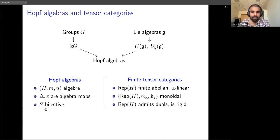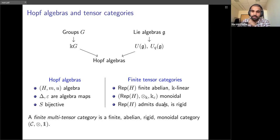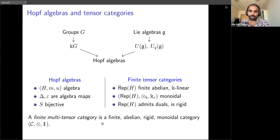The antipode map allows us to define duals in this category, making it rigid. So if we have a category with these features we call it a finite multi-tensor category — it is a finite abelian, rigid, monoidal category. The typical example is Hopf algebras, but we can also get examples of multi-tensor categories through operator algebras or VOAs — it's a more general topic that very closely mimics the Hopf algebra case.